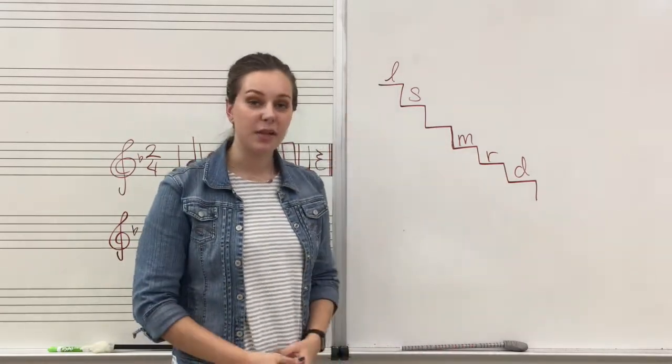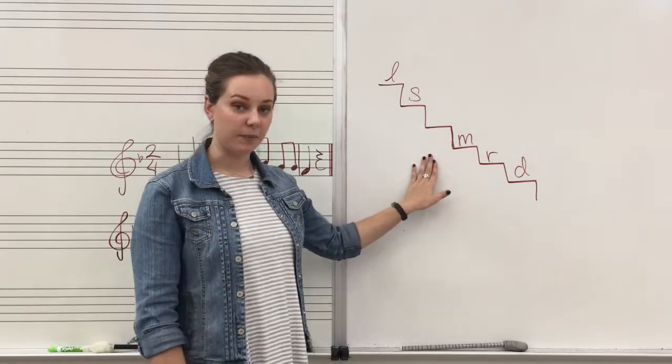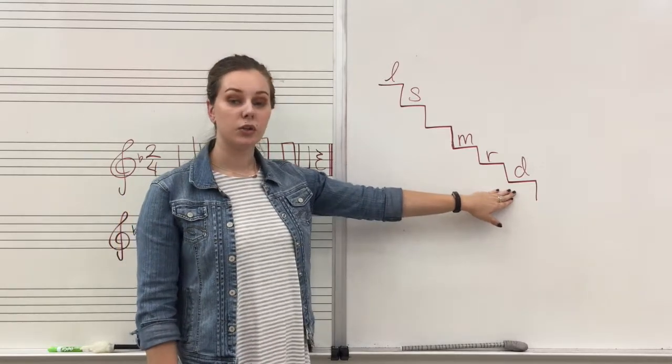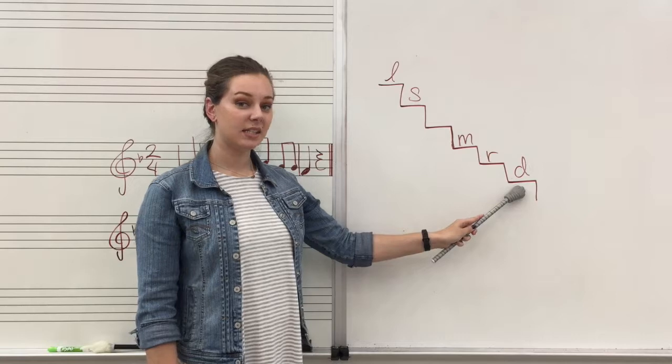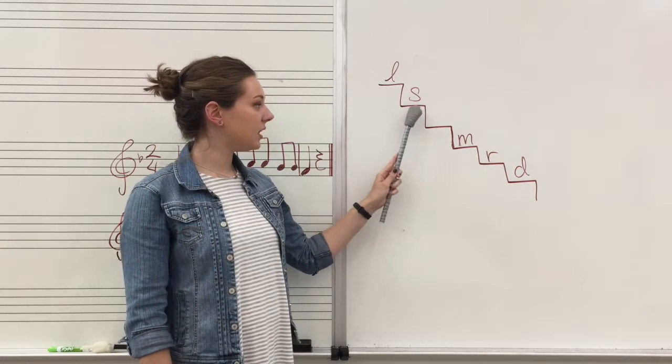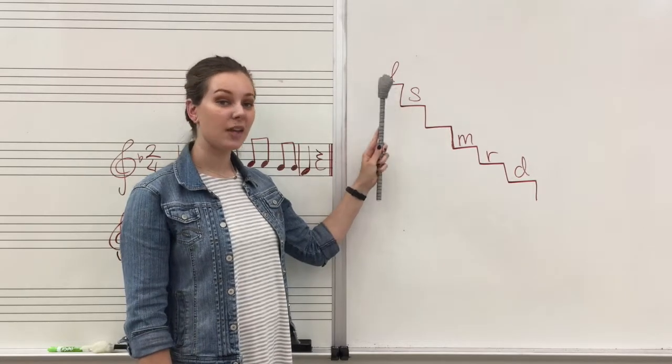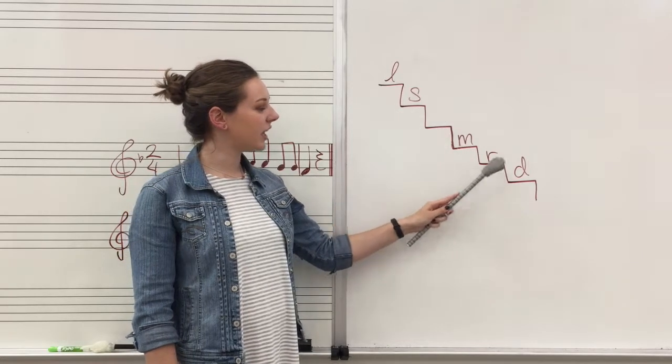Our Do pentatonic scale would look like this on our tone ladder. Let's sing from low to high while pointing to our pentatonic scale. Ready sing. Do re mi sol la. Let's sing from high to low. La sol mi re do.